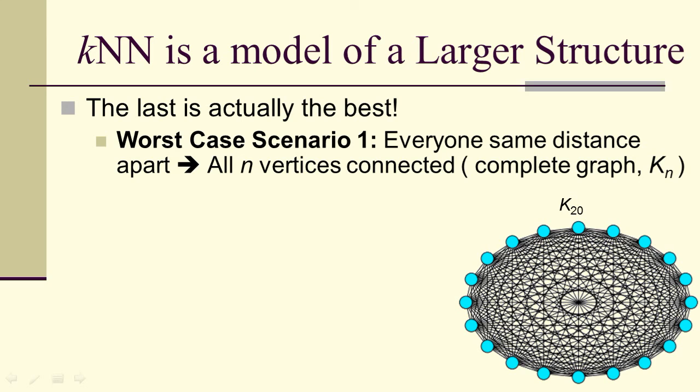Now, that doesn't mean the K nearest neighbor's algorithm is a bad algorithm. As a matter of fact, the last scenario, the AND option, where you have the upper bound of 50 on the degree of every vertex, turns out to be the best approach and the one we're going to use. The reason is because the K nearest neighbor's algorithm is a model of a larger structure. Let's suppose that everyone was exactly the same distance apart. Then in the real world, in the Facebook world, we would have a billion connected vertices—a complete graph, an extremely huge complete graph with huge numbers of edges.